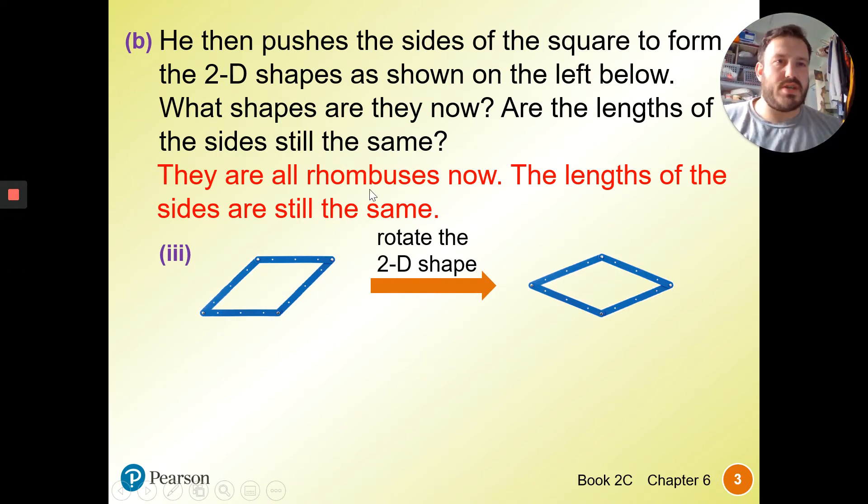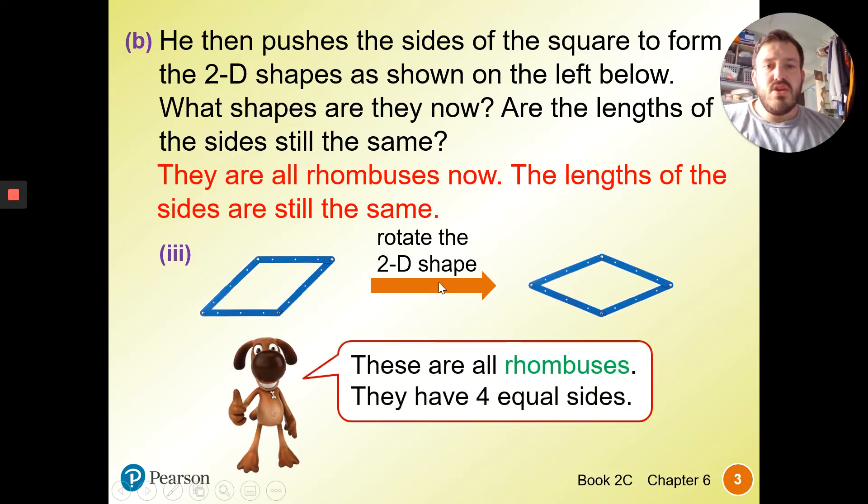I always think square and rhombus are pretty much the same thing. A square has a 90 degree angle, whereas a rhombus is a square pushed over, tilted to the side. It could even rotate and look like this. So these are all rhombuses. They all have four equal sides.